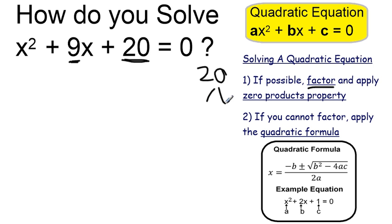20 could be, for example, 1 times 20, it could be 2 times 10, but where it works is if we consider it 4 times 5, because 4 times 5 equals 20, 4 plus 5 equals 9.